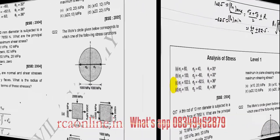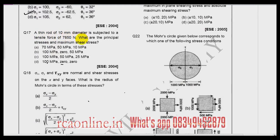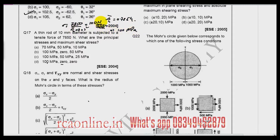No need to find theta for question 16. Question number 17: a thin rod of 10 mm diameter is subjected to a tensile force of 7850 N. First find the stress: 7850 divided by pi/4 times 10 squared. Since pi/4 is approximately 0.7854, the stress works out to 100 Newton per mm squared, or 100 Megapascal (since 1 N/mm² = 1 MPa). Draw the stress element; the coordinate on the x-face is (100, 0).